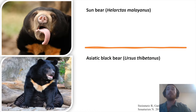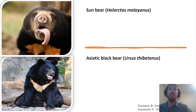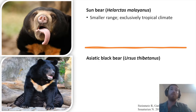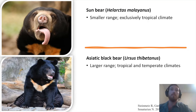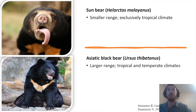My two study species are the sun bear and the Asiatic black bear. They coexist in some portions of their range and have very similar life histories, which is interesting from an ecological standpoint about how they can coexist peacefully. There are a couple differences between these bears that might affect their metabolic rates and could help explain this coexistence. For example, the sun bear has a much smaller range than the Asiatic black bear, living exclusively in Southeast Asia in tropical climates.